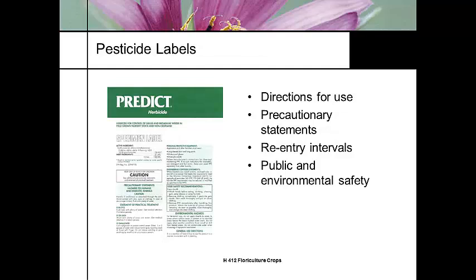This is an example of a pesticide label. This particular one is a herbicide, but it has specific statements you are responsible for. The directions for use tell you how to use that particular product. Precautionary statements include precautions to the applicator, precautions to the environment — could be for fish, livestock, or other animals. It's going to have your restricted entry interval, things on public environmental safety, and the toxicity. It's required that you read and understand this before you apply your product.